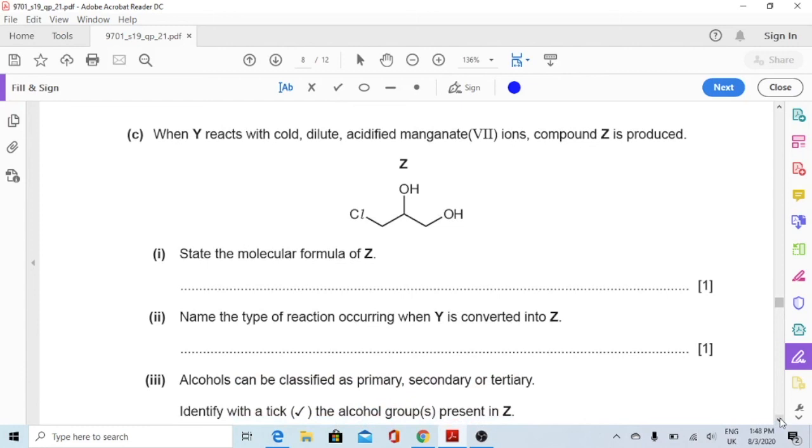Part C, when Y reacts with cold dilute acidified manganate 7 ions, compound Z is produced. Part 1, state the molecular formula of Z. There are three carbon atoms, so I'll write C3. And then we have two hydrogens here, one here, one here, two more here, and then one more here. So 1, 3, 4, 5, 6, 7. So we have seven hydrogen atoms, C3H7. And then we have two oxygen atoms and single chlorine atom, so C3H7O2Cl.